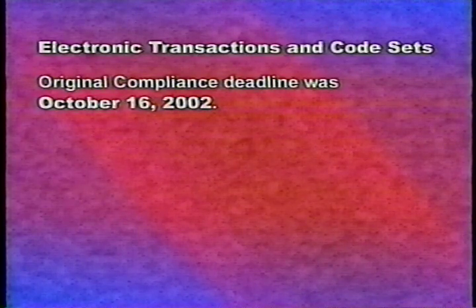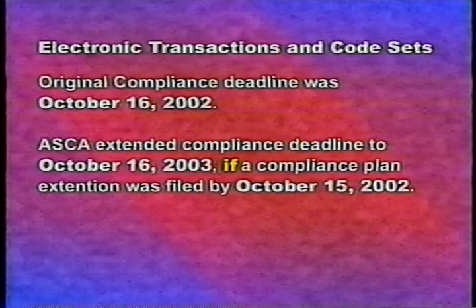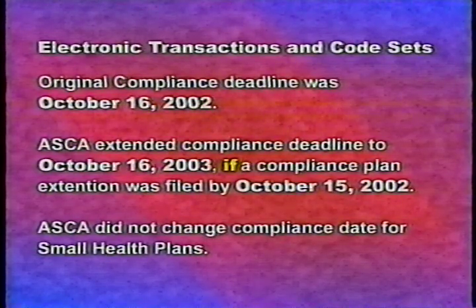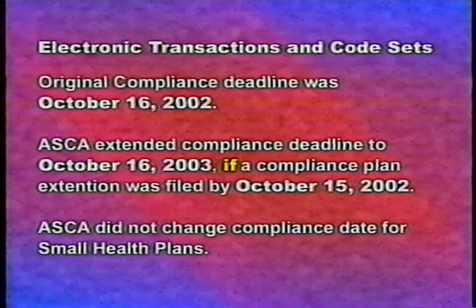The final rule for electronic transactions and code set standards was issued in August 2000. Compliance was required by October 16, 2002 for large health plans, health care providers, and health care clearinghouses. However, Congress realized many covered entities would not be ready. In December 2001, it passed Public Law 107-105, the Administrative Simplification Compliance Act (ASCA), which granted a one-year compliance extension to October 16, 2003 under certain conditions. That extension was available to covered entities that submitted a compliance extension plan to CMS by October 15, 2002. Small health plans with receipts of less than $5 million have always had until October 16, 2003 to comply.